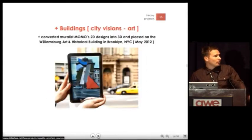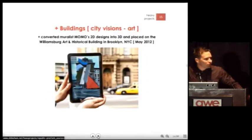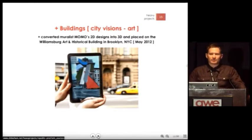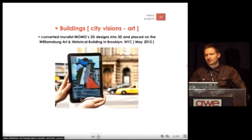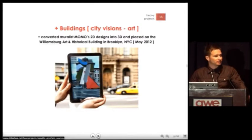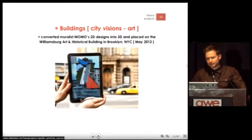We're also using buildings and architecture itself as the canvas to allow artists to make incursions into spaces where they wouldn't have been able to do so before. We worked with Momo on this one, converted his 2D shapes to 3D, and put them on the Williamsburg Art and Design Building in Brooklyn.